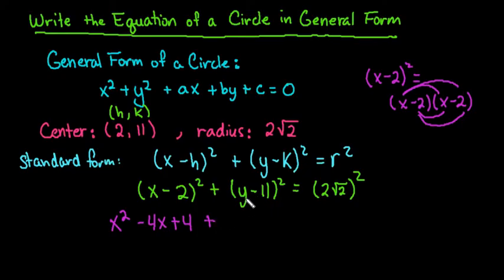We would do the same thing with our y term. We square the first term, find the product, and the middle term is always twice the product, so we would do 2 times negative 11, which would give us negative 22y. And then we would square the last term, which is 121.